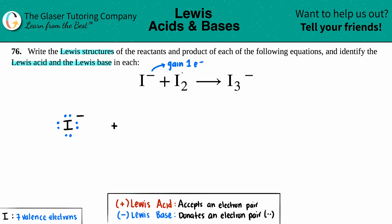Now let's do I₂. I have two iodines — I and I. They both have seven valence electrons: one, two, three, four, five, six, seven for each. No charge on this one, so I don't have to gain any electrons. I make one single bond between them, and they both satisfy the octet rule.